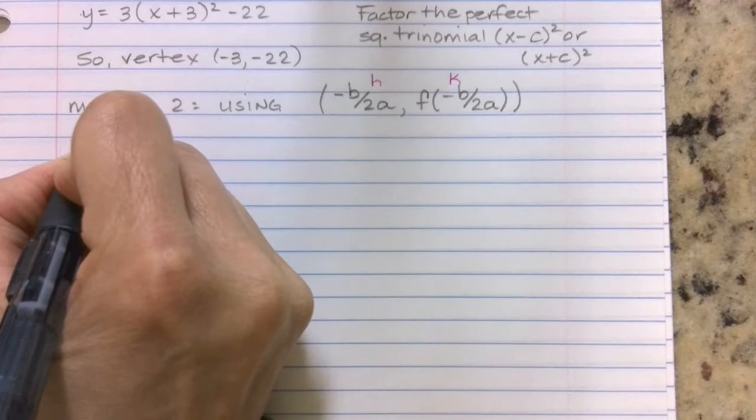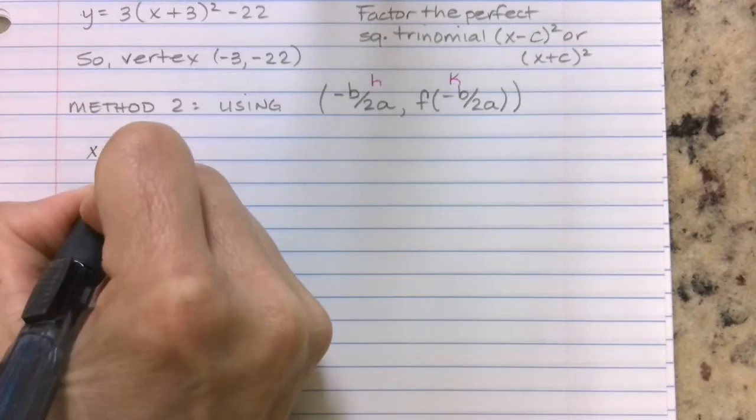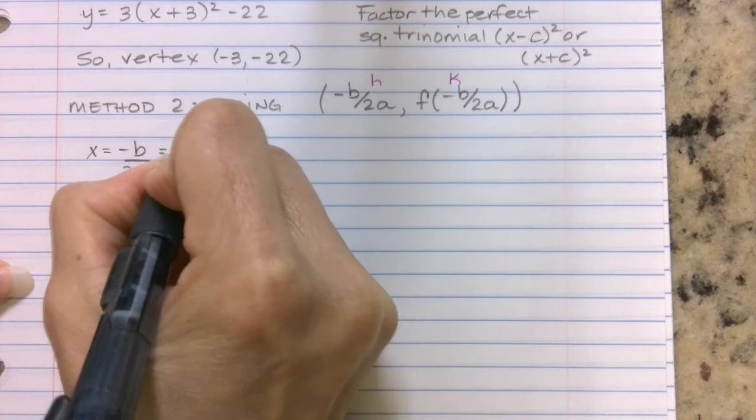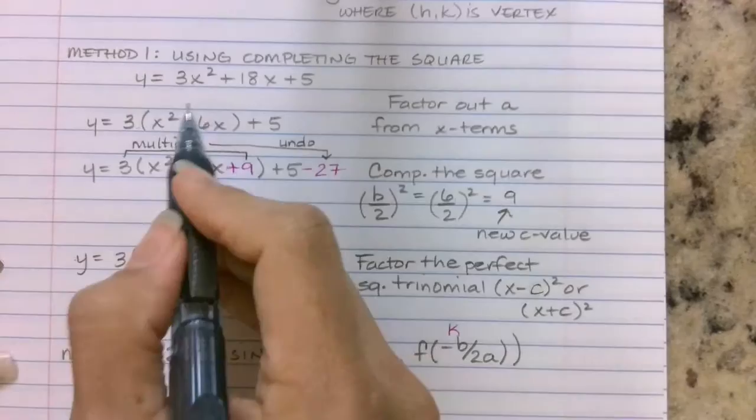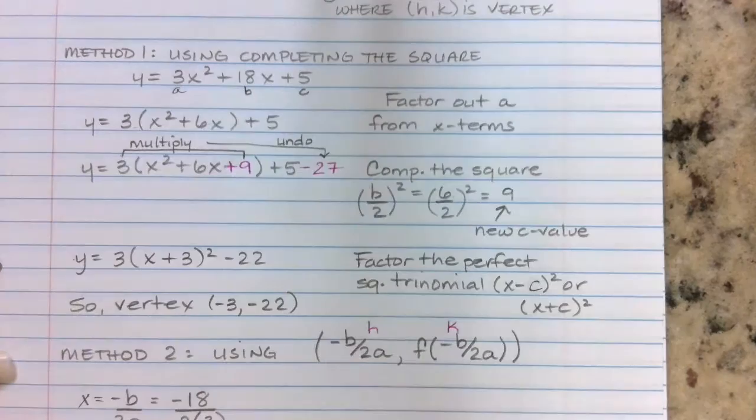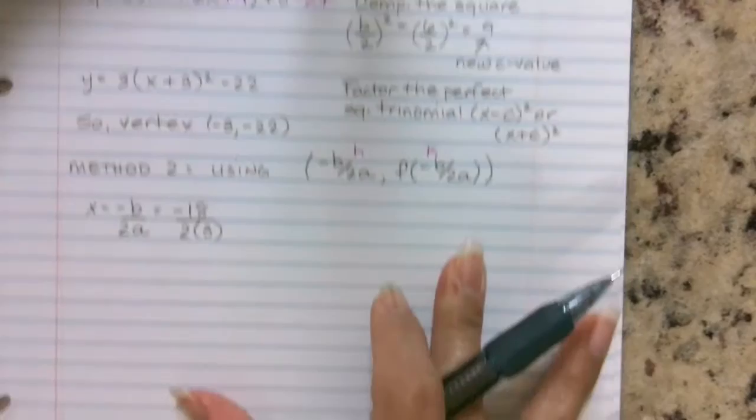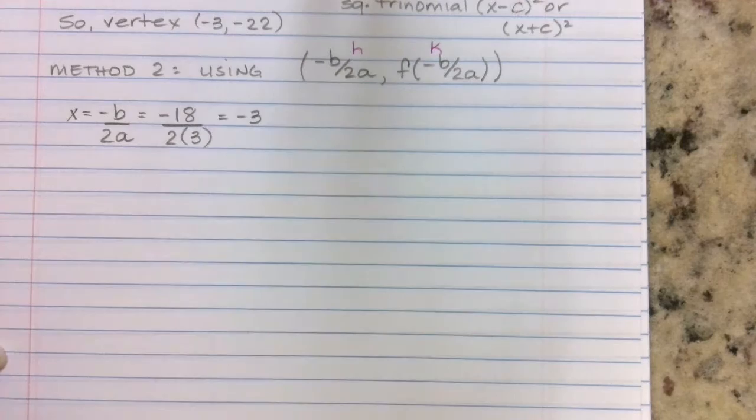So let's do that now. So we're going to start off using the axis of symmetry equation, which we just said is -b/2a, and we're doing the same problem. Our b value was a positive 18. So we put that over 2 times our a value was a 3. This here is my a value, this is my b value, and this is my c value. So that's where I pull that information down from.